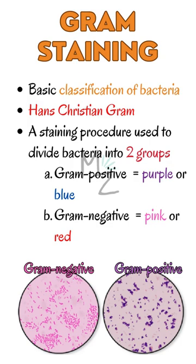Gram staining separates most important bacteria into two groups: number one, the Gram positive bacteria which stains purple, and the Gram negative which stains pink or red. As in this picture, you can visualize both the Gram positive — the purple one — and the Gram negative — the pink one.